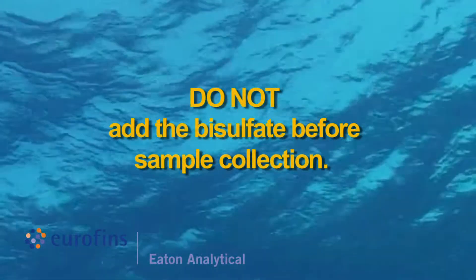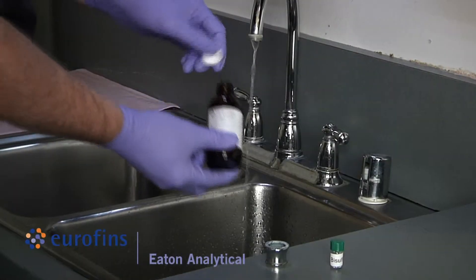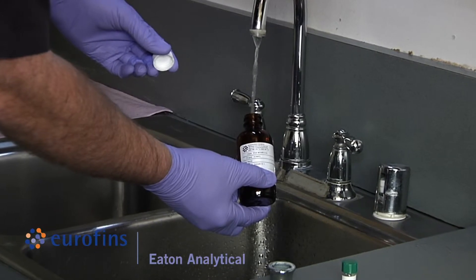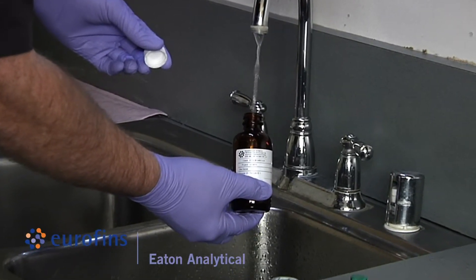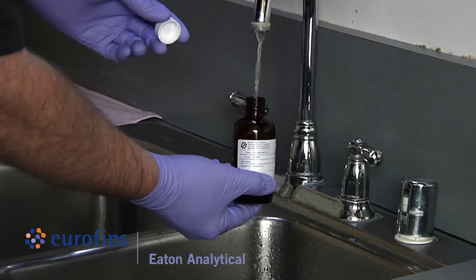Do not add the bisulfate before sample collection. Start sample collection by filling the sample bottle up to the bottom of the neck, taking care not to flush out any preservatives and making sure the mouth of the bottle does not come in contact with anything other than sample water.